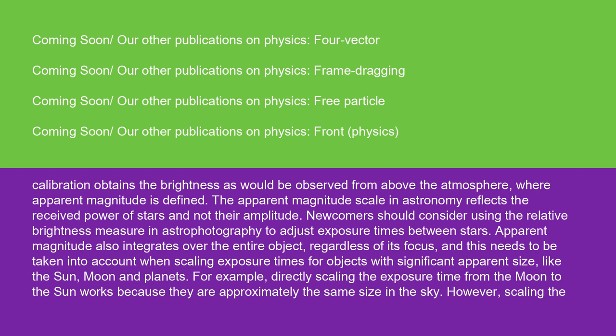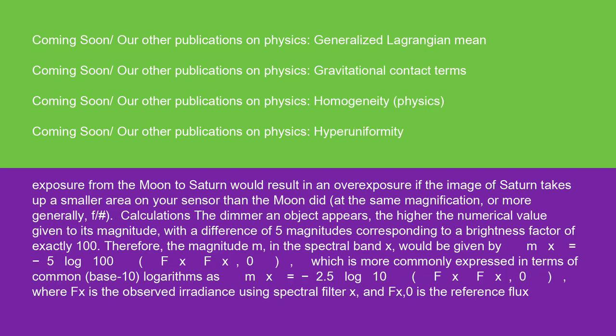The apparent magnitude scale in astronomy reflects the received power of stars and not their amplitude. Newcomers should consider using the relative brightness measure in astrophotography to adjust exposure times between stars. Apparent magnitude also integrates over the entire object, regardless of its focus, and this needs to be taken into account when scaling exposure times for objects with significant apparent size, like the sun, moon, and planets. For example, directly scaling the exposure time from the moon to the sun works because they are approximately the same size in the sky. However, scaling the exposure from the moon to Saturn would result in an overexposure if the image of Saturn takes up a smaller area on your sensor than the moon did, at the same magnification, or more generally, f/#.